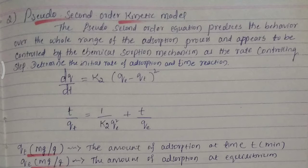You can see the equation dqt/dt = k2(qe - qt)². You can rearrange that equation to t/qt = 1/(k2·qe²) + t/qe.